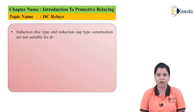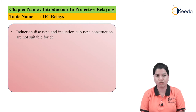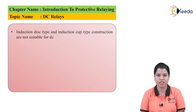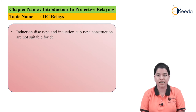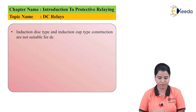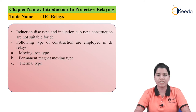The induction disc type relay and induction cup type relay cannot be used for DC quantities. The reason is that both these relays work on the interaction of alternating fluxes which produce torque. Since alternating fluxes are absent in DC, these relays cannot be used for DC.